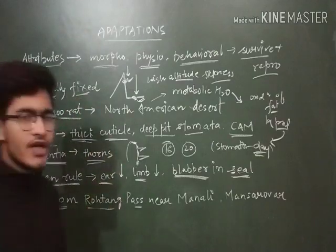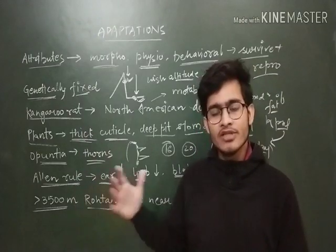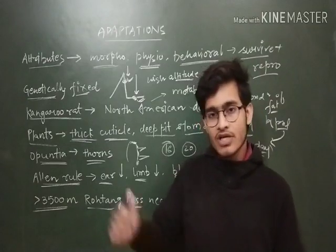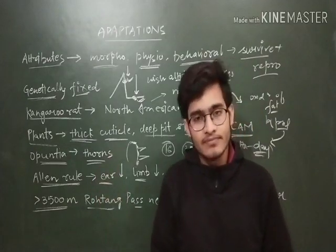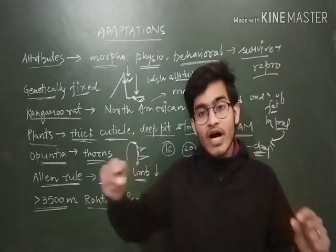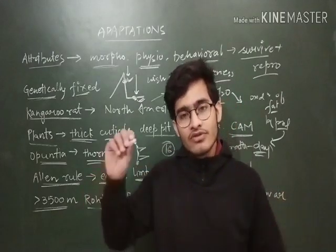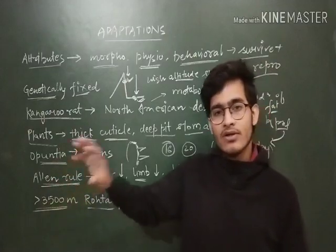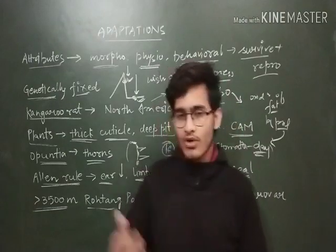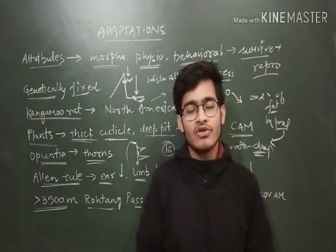These are some examples of adaptations, and more examples will be covered in part two of this video. These examples are important because in assertion-reason questions, you will be given a statement and asked why it is happening, or what the particular adaptation is and how the organism is able to survive. I hope you got this video very well — if you did, hit the like button, share this video with your friends, subscribe to the channel, and press the bell icon.